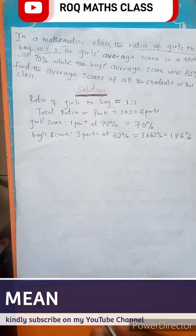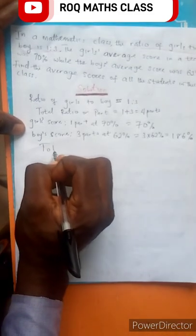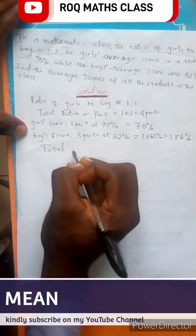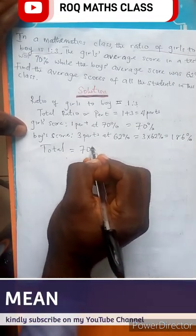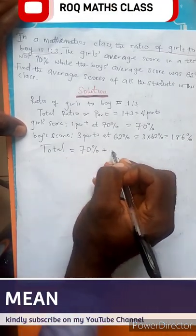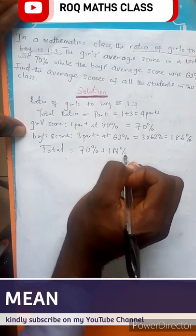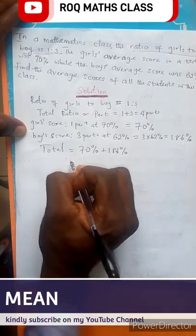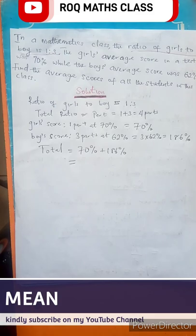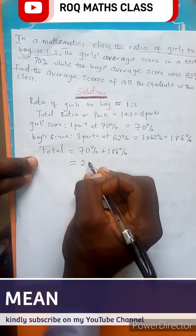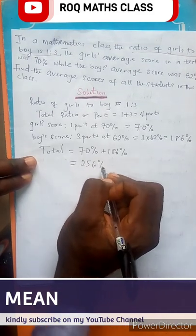Now how many do we have total? The total score, which is 70% of the girls' part plus 186% of the boys' part. This is equal to 256%.